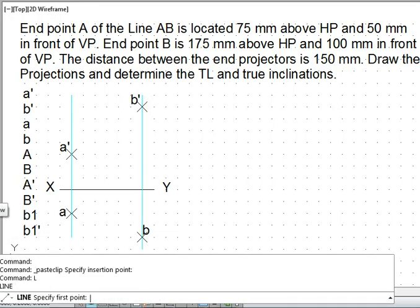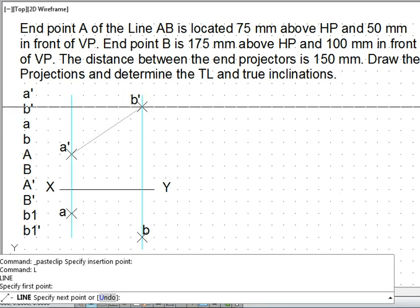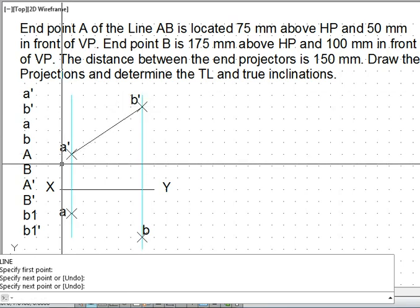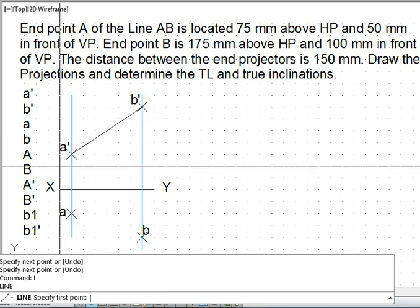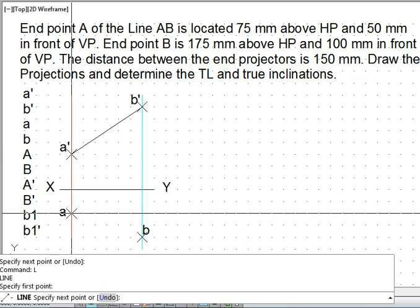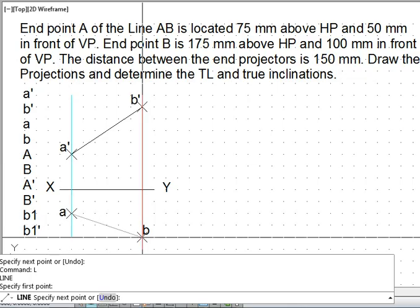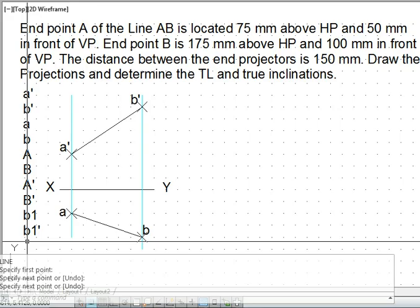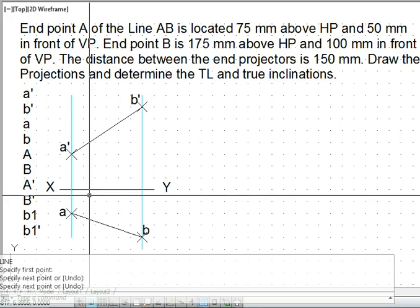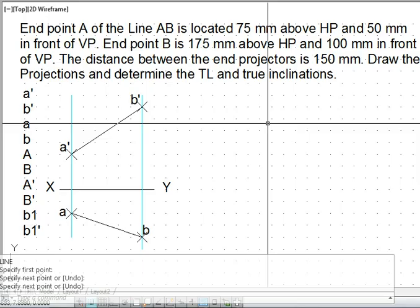Now we have the projection of the line available to us. Just join point A dash with point B dash. We have the projections. These are the projections given. Now in this question we are asked to draw the projections, that first thing we have done, and to determine the true length.